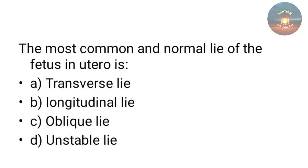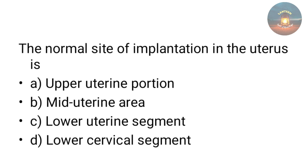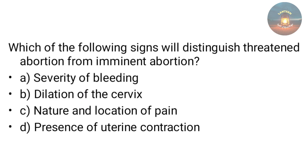The most common and normal lie of a fetus in utero is — transverse lie, longitudinal lie, oblique lie, or unstable lie? The answer is longitudinal lie. The normal site of implantation in the uterus is — upper uterine portion, mid-uterine area, lower uterine segment, or lower cervical segment? The answer is upper uterine portion.